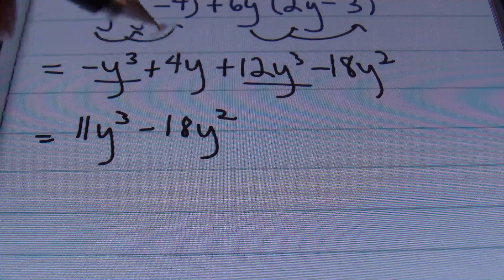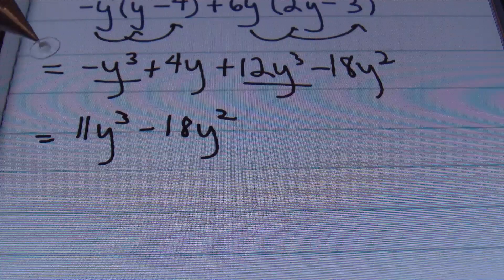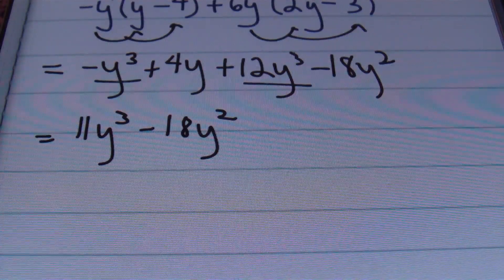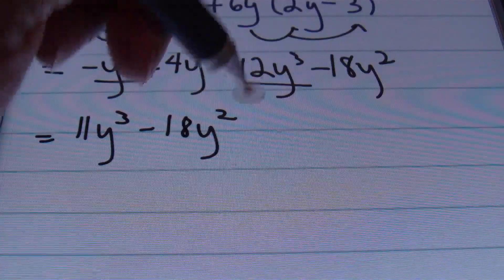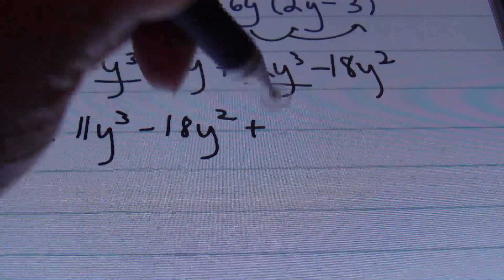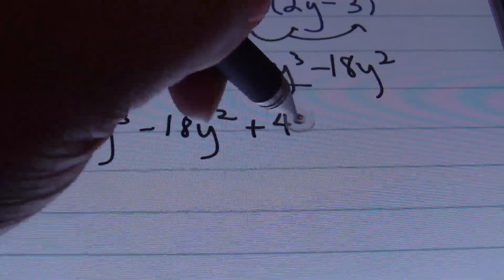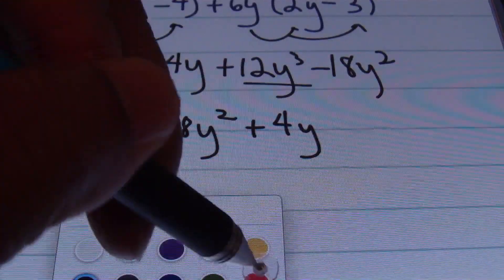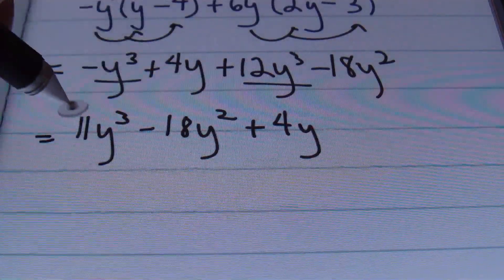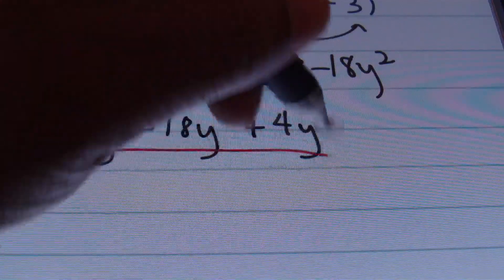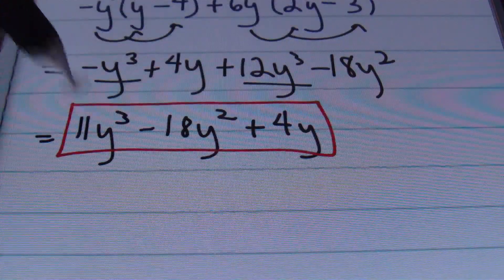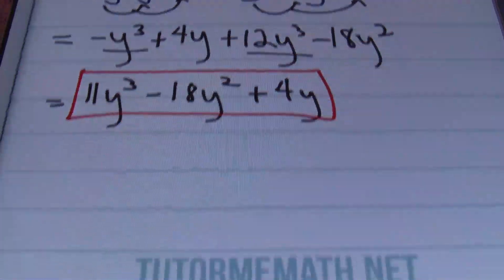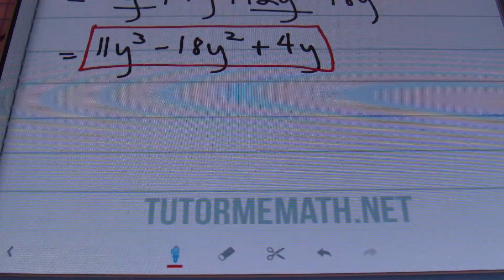Next I'll be looking at that 4y to the first power — it doesn't have any like terms to combine with, so we'll just bring it down. This will be a positive 4y. And this is the answer to problem number 10, ladies and gentlemen: 11y cubed minus 18y squared plus 4y. Done and done.